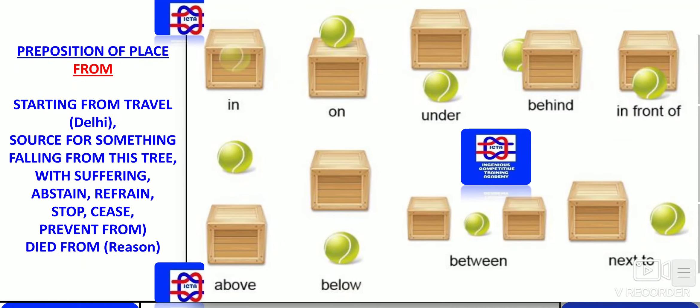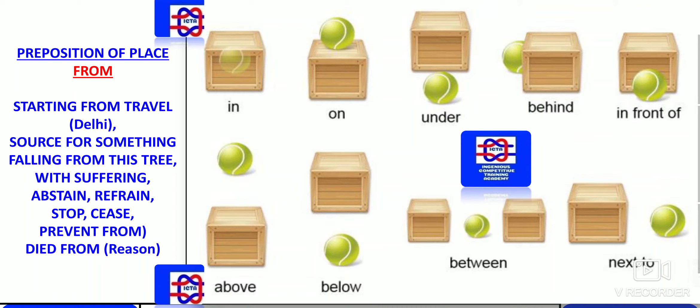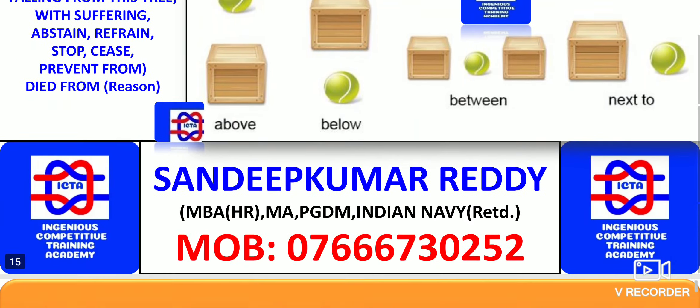Here we have the preposition of place that is 'from.' Starting point of travel: from Delhi or whatever the place is. Source for something: falling from this tree. With suffering: abstain from, refrain from, stop or cease from, prevent from, died from — these are phrasal verbs where you can use 'from' as a preposition of place indicating starting point or position. These are a few examples of how the preposition of place 'from' can be utilized.